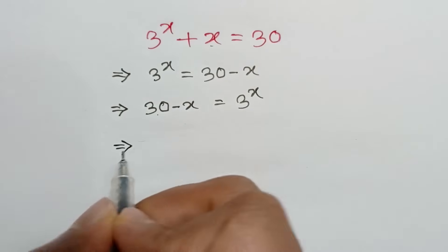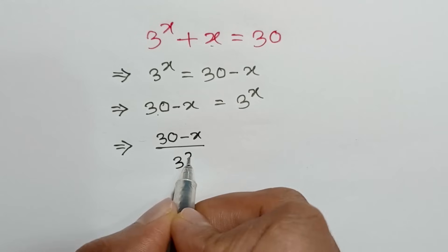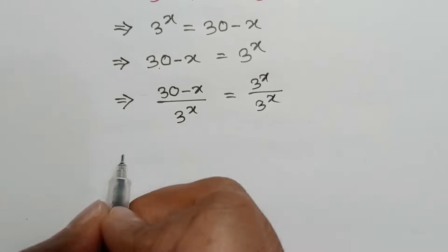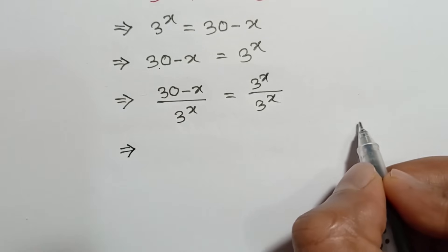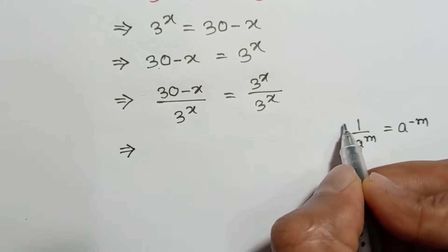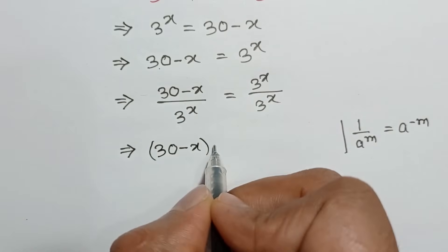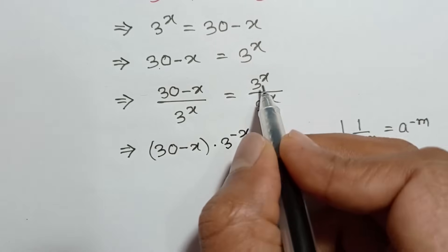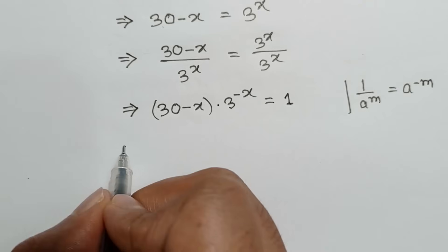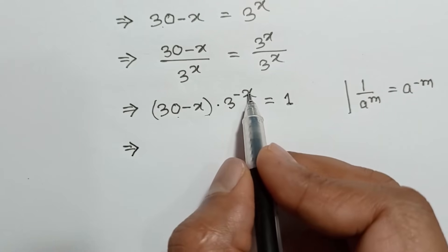Or if we divide both sides by 3 to the power x, we will have 30 minus x over 3 to the power x is equal to 3 to the power x over 3 to the power x. Or if we apply the rule that 1 over a to the power m is equal to a to the power negative m, we will get 30 minus x times 3 to the power negative x is equal to 1.